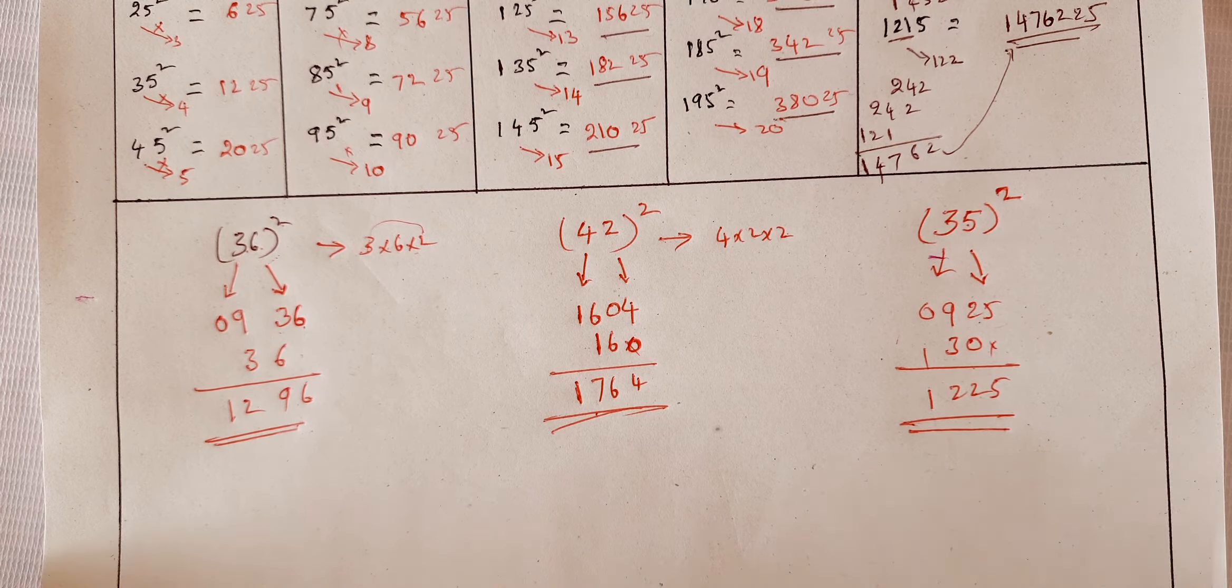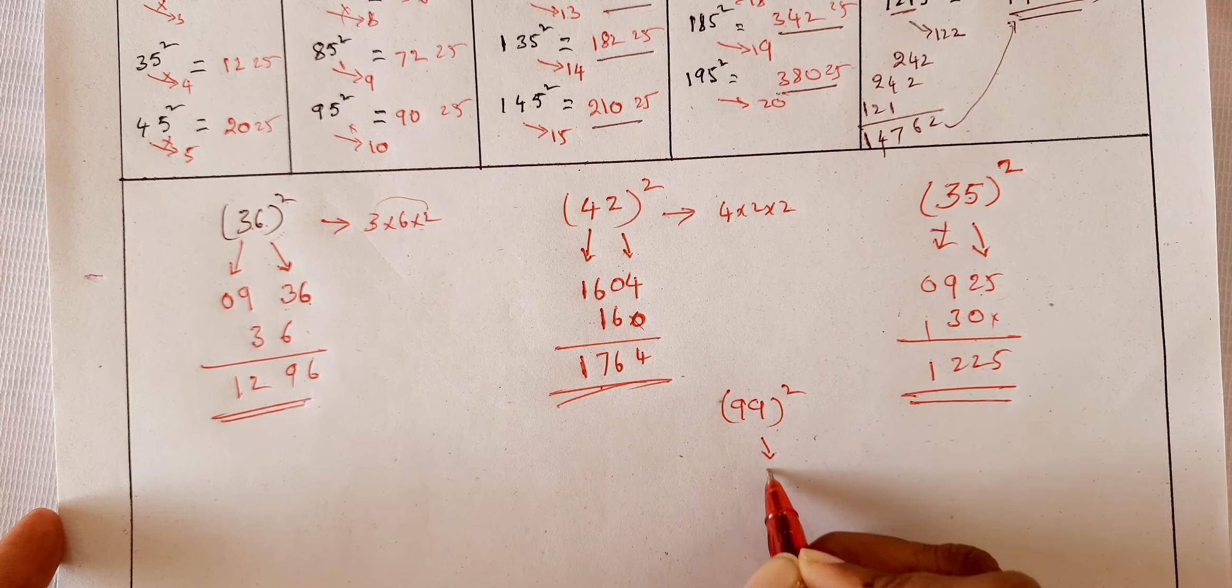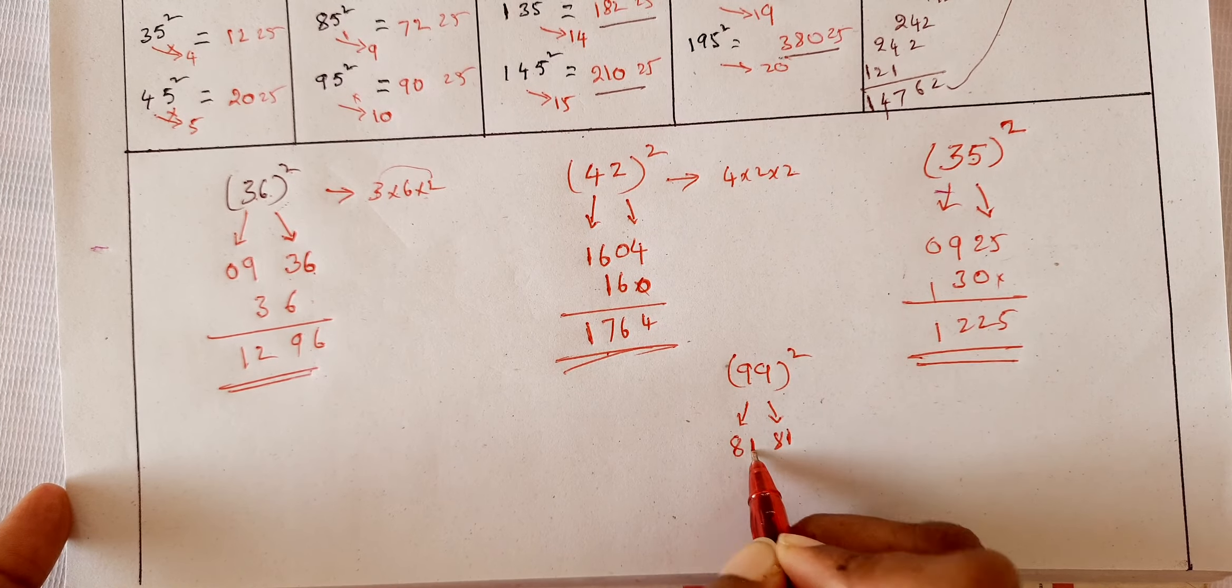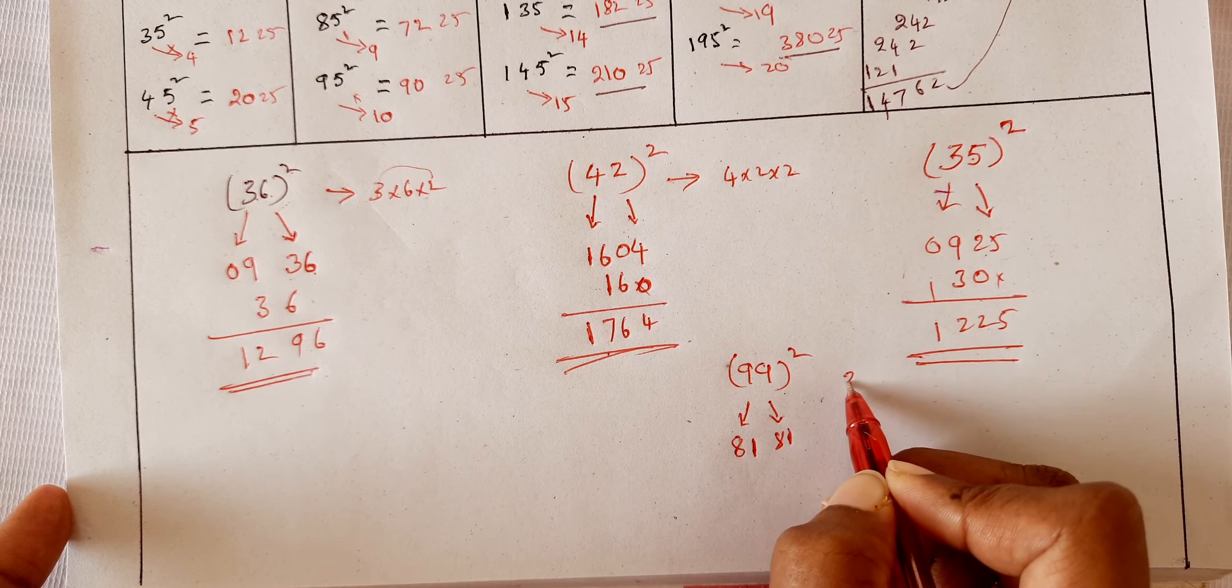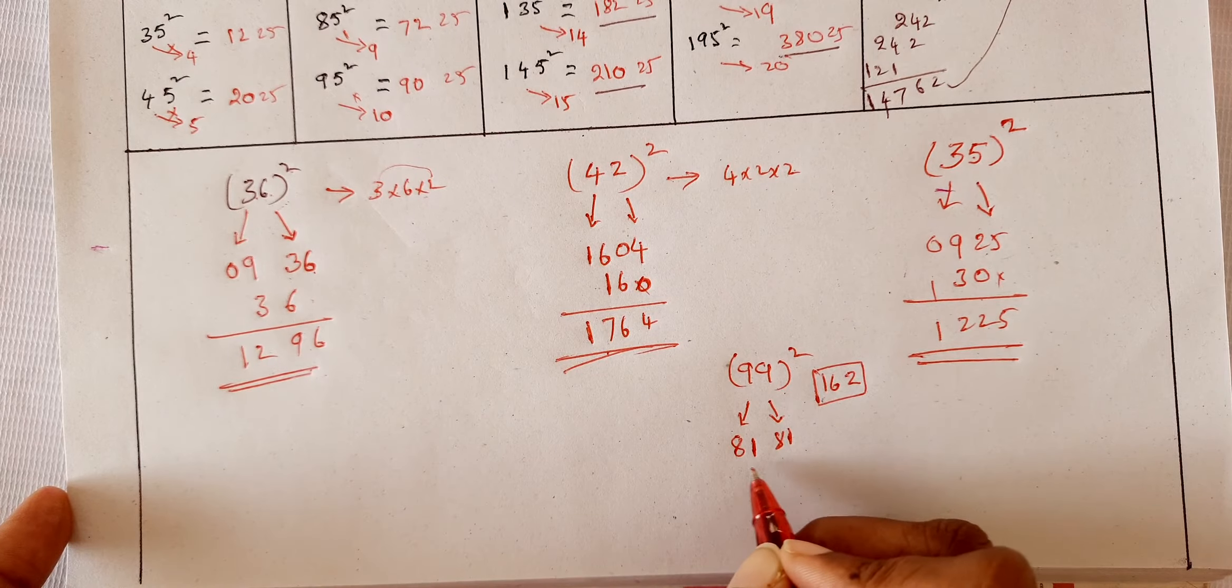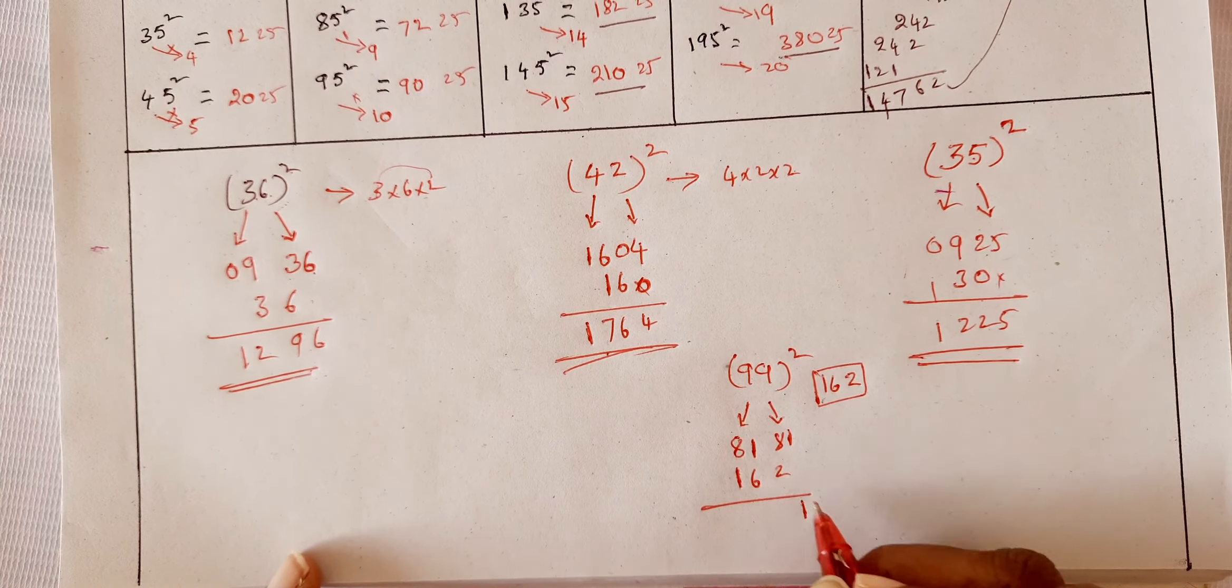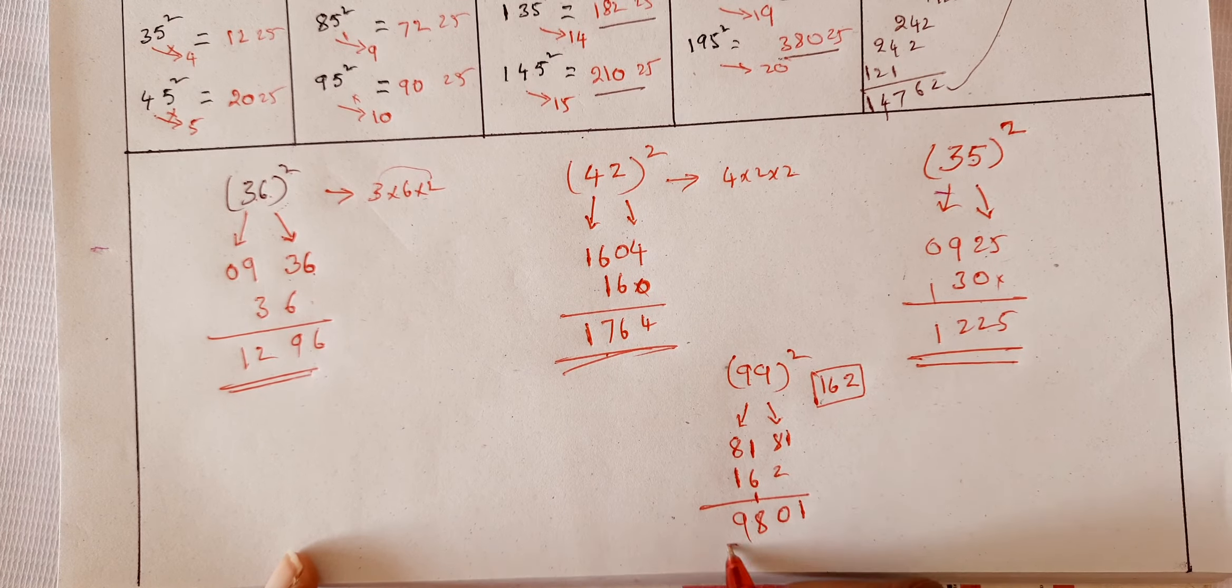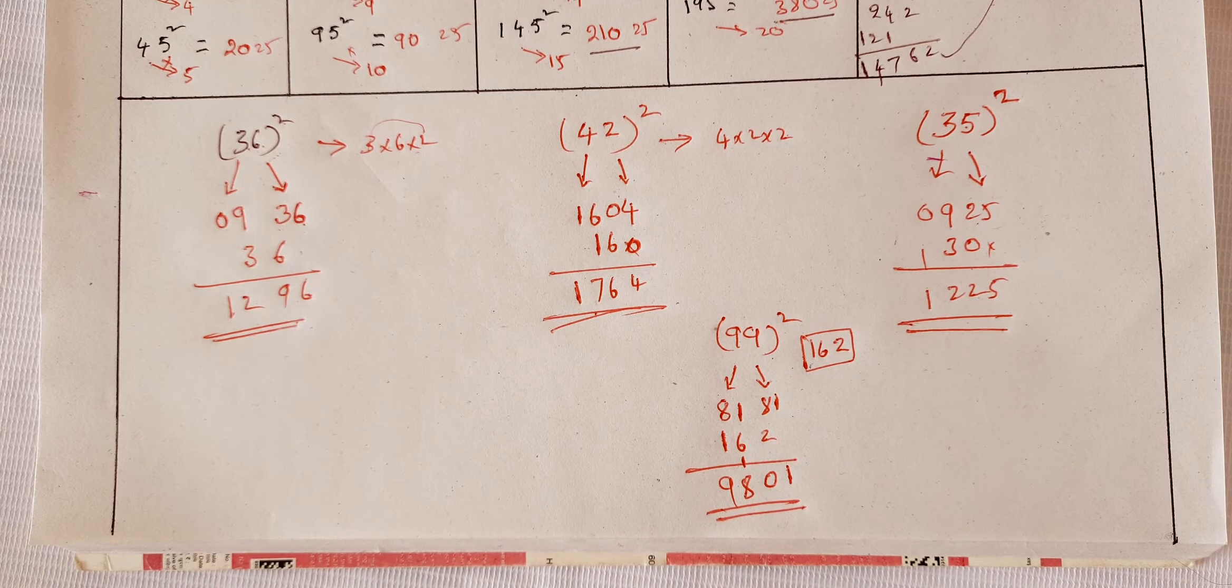So now suppose let us do it for 99 whole square. So 81, and here it goes 81. Write 9, nine nines are 81. 81 into 2. Two ones are 2, two eights are 16: 162. Leaving ones place, you have to write the number. Now 1. 2 plus 8 is 10. 8, 9. So 9801 is the square of the number. So this is the most beautiful trick.